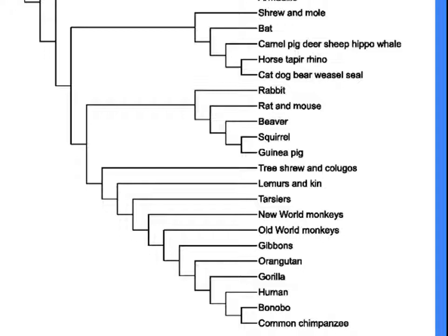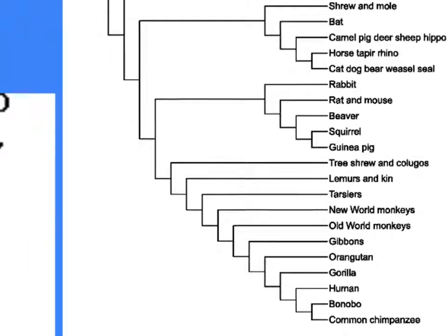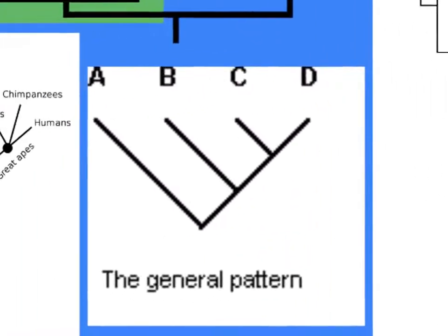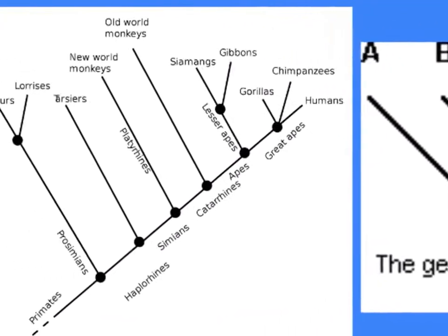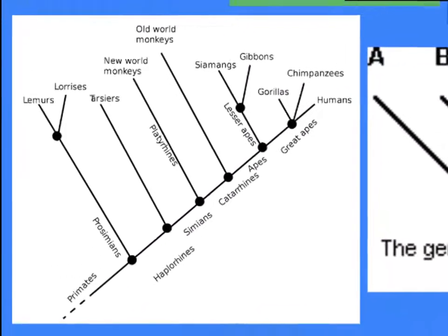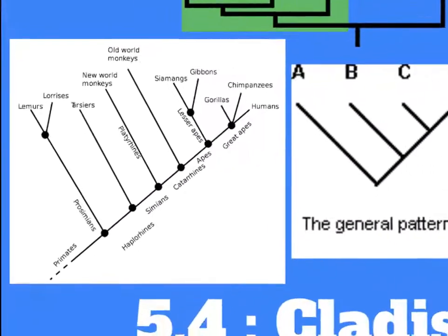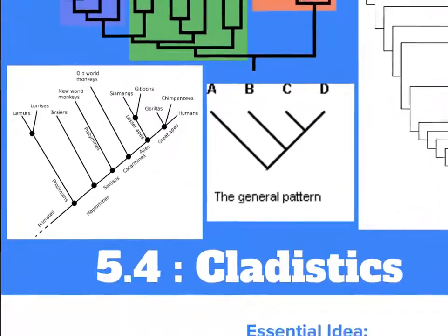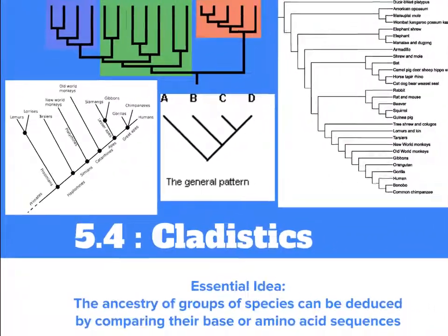Taxonomists use phylogenetics in order to classify organisms, which traditionally looked at common characteristics and now utilizes genetic material to deduce evolutionary relationships. Let's dive in and make more sense about cladistics, cladograms, and explore a few examples.